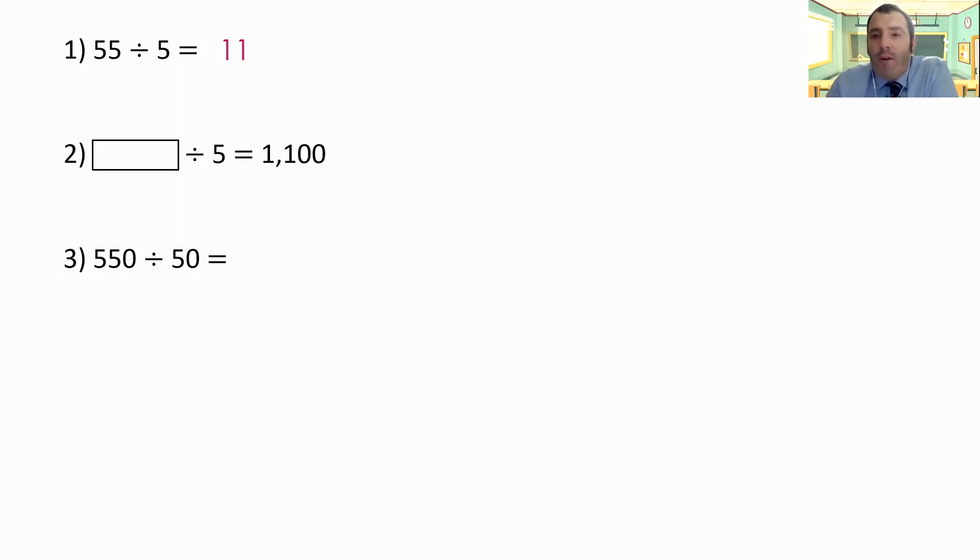Can I use that knowledge to work out that something divided by 5 is 1100? Well, I know that 1100 is 100 times 11. So if my answer has been multiplied by 100, surely the number that's missing from my question has been multiplied by 100. And you'd be right. 5500, that's 55 times 100.